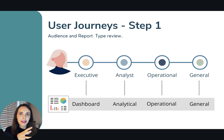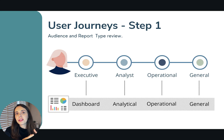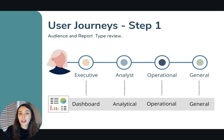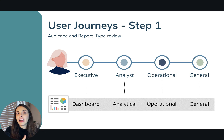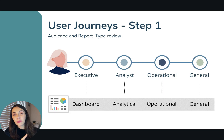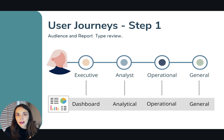You can have the executive type of persona, analyst, operational, or a more general type of persona. To match these personas with the right dashboards, you have the dashboard type of report, analytical, operational, and so on. The granularity grows when you go from a dashboard to an analytical or operational report. A dashboard will have a high-level view of the main metrics, an analytical report requires more focus on interactivity, and an operational report is very granular with a lot of detail about a particular part of the business.